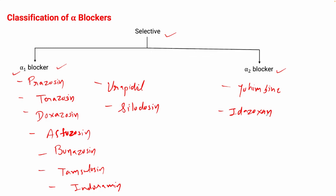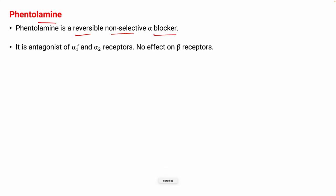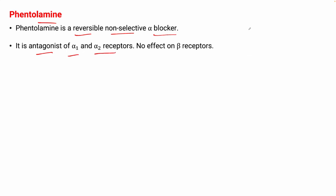Today in this session we are going to discuss the non-selective drugs based on the classification — specifically phentolamine and phenoxybenzamine. In coming sessions we will discuss the selective drugs. So the first drug is phentolamine. It is a reversible non-selective alpha blocker; it is an antagonist of both alpha-1 and alpha-2 receptors, so it inhibits all activities mediated by these receptors. There is no effect on beta receptors.